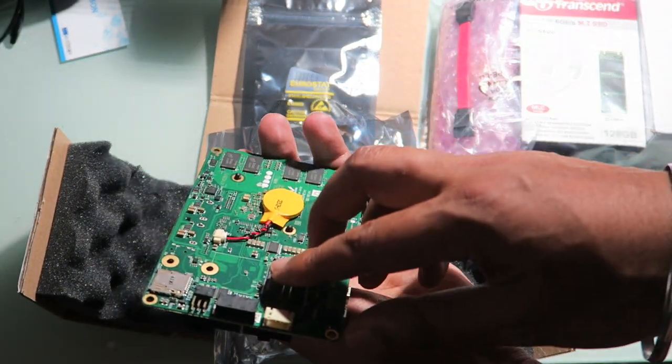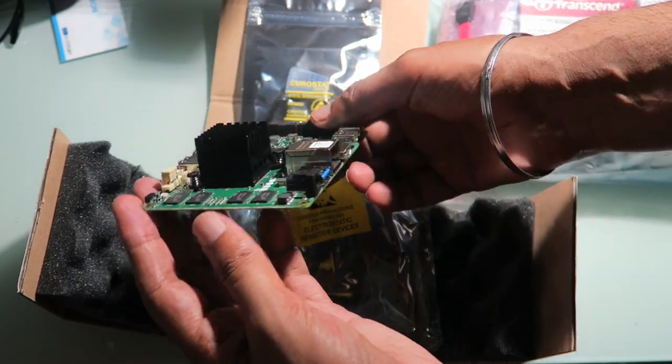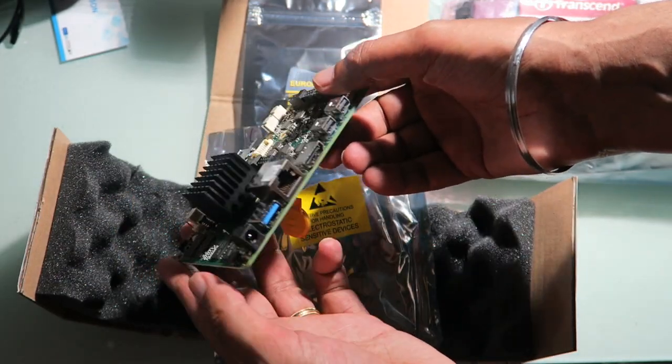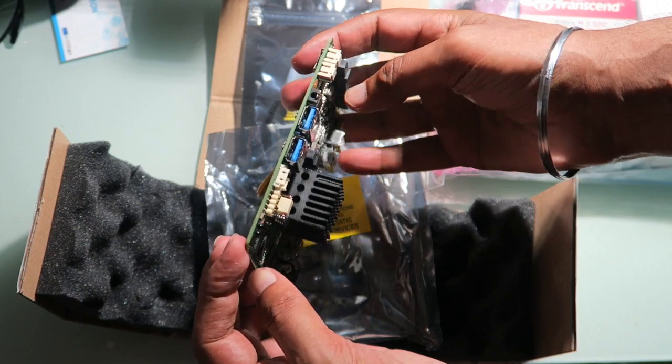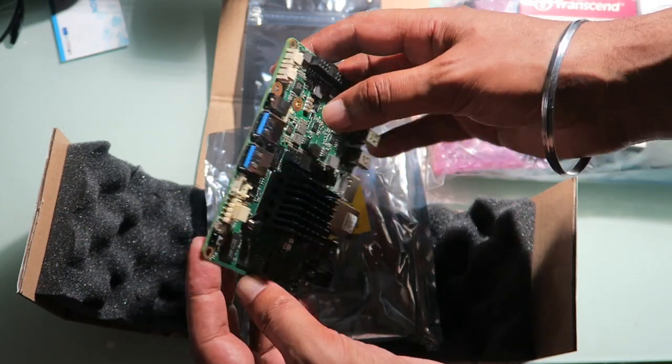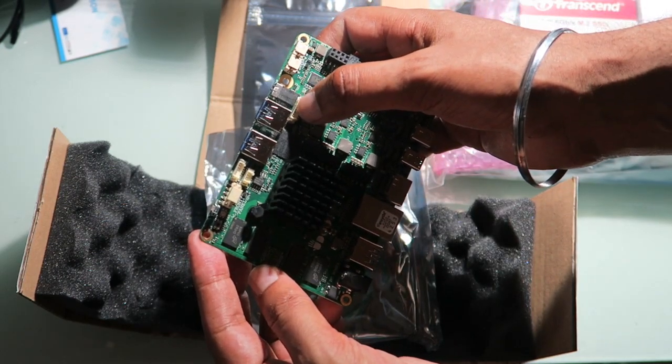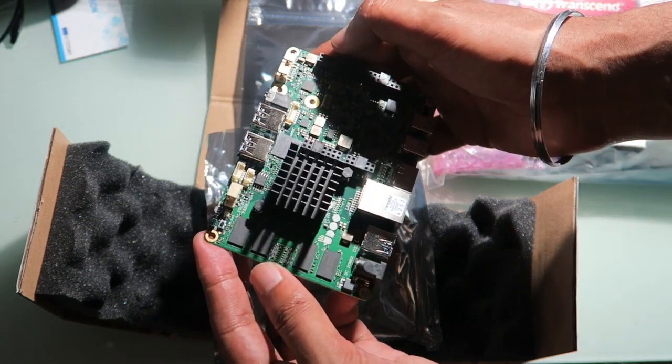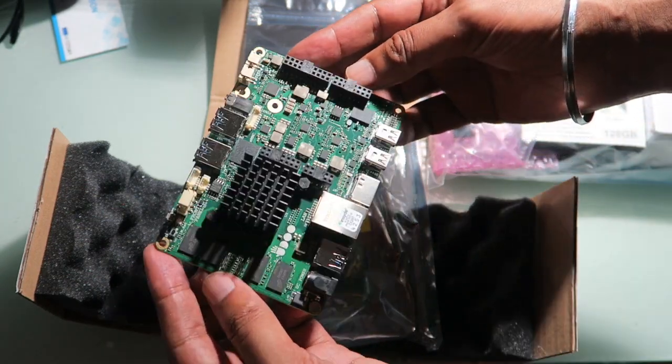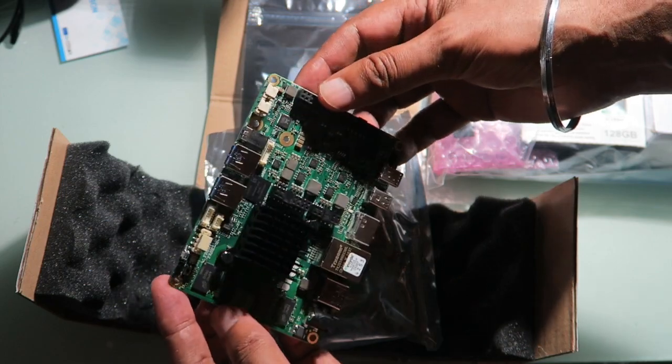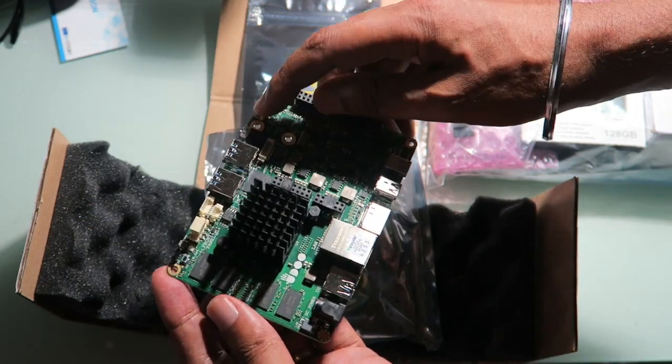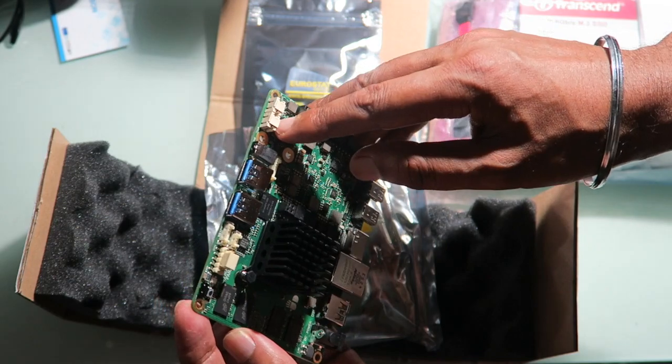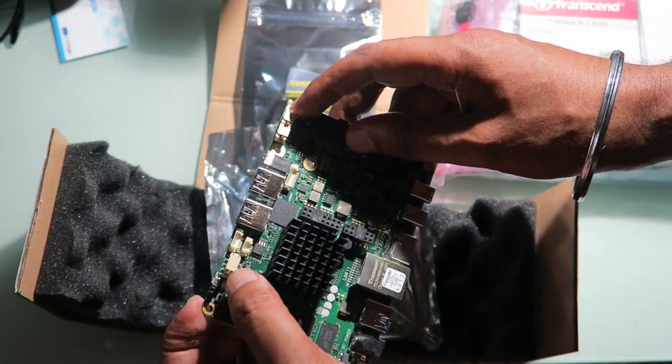That's the SATA connection so you can connect an external hard drive as well. Power, and I think there's an audio jack there for the headset. This is speaker outputs, front panel.